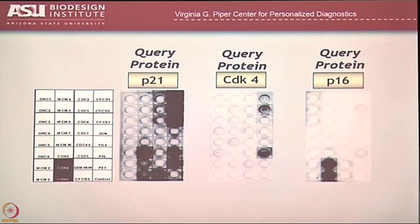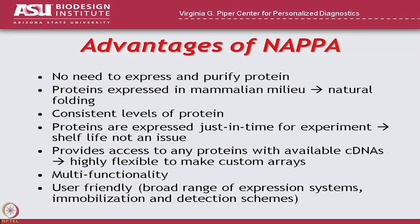The advantage here is now I don't have to express or purify these proteins — they were made using mammalian extracts. The levels of proteins were consistent on this chip. They were made at the time of the experiment, so I made the proteins and tested them minutes later. And of course I could do this general approach using any kind of cDNA. If I can clone the gene and make the cDNA, I can make the protein array.